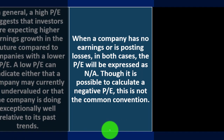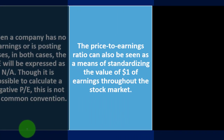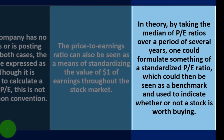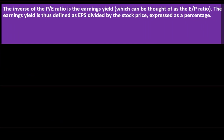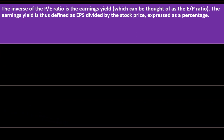When a company has no earnings or is posting losses, the P/E will be expressed as N/A. Though it is possible to calculate a negative P/E, this is not the common convention — most say the P/E doesn't exist or is not interpretable until a company becomes profitable. The P/E ratio can also be seen as a means of standardizing the value of one dollar of earnings throughout the stock market. By taking the median of P/E ratios over several years, one could formulate a standardized P/E that serves as a benchmark.